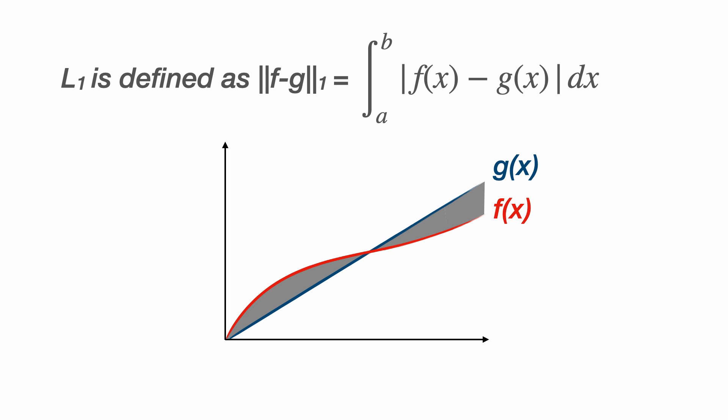So you can see why this makes a good measure of how close the function g is to f. Ideally, a good approximation would stay close to f of x all the way along the interval and the shaded area would be as small as possible.